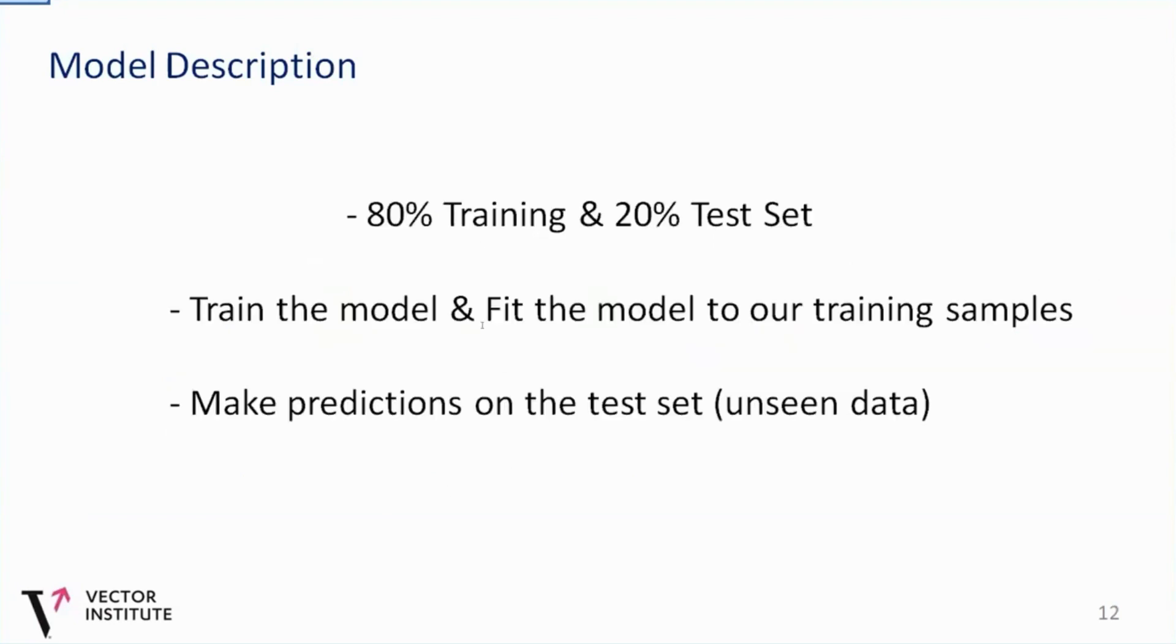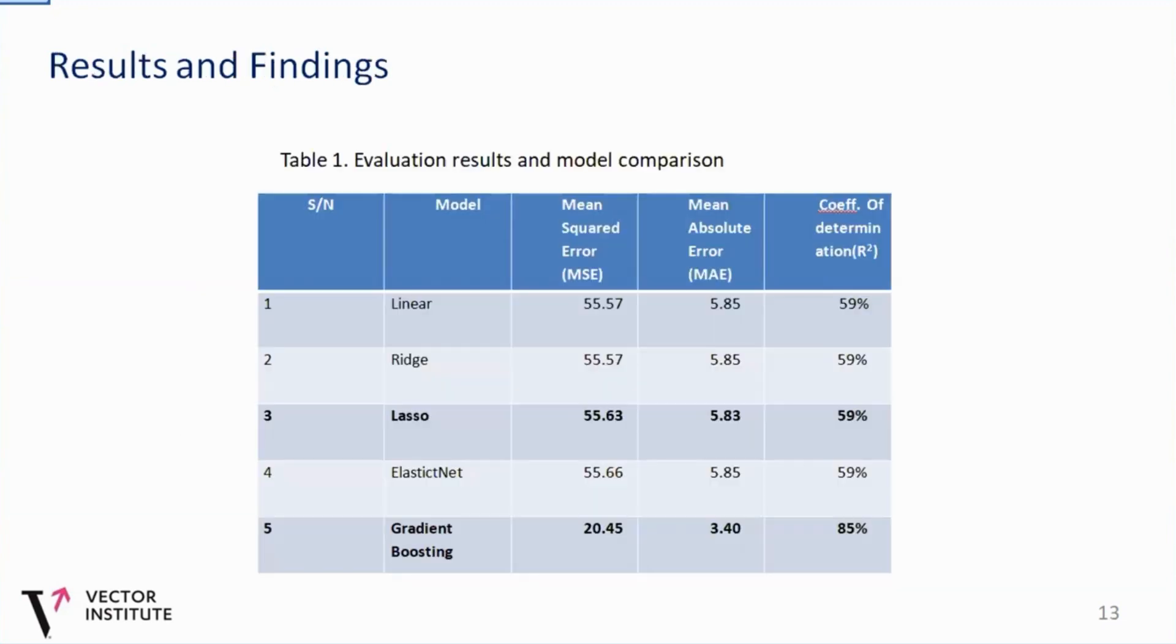So in the model description, we trained our model using 80 percent training data set and test sets contains 20 percent. And after training the model, and of course, after the model was half length, we now made prediction on the test sets, which happens to be the unseen data sets. And the results of the evaluation where we used the mean squared error, the mean absolute error, and the coefficient of determination here for the mean squared error and mean absolute error, which shows the difference between the actual value and the predicted value. Of course, lower value for these mean squared error and mean absolute error indicates a better fit, while the coefficient of determination here actually shows the accuracy of our model. And a higher value here indicates a better fit.